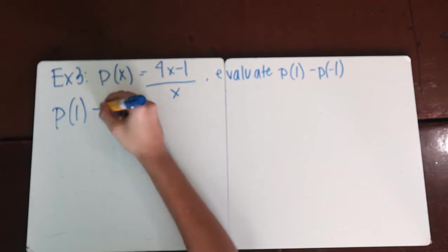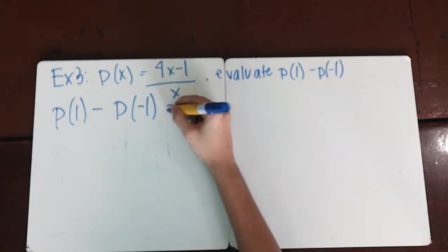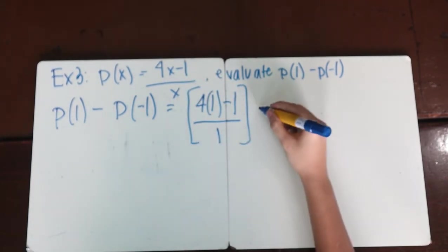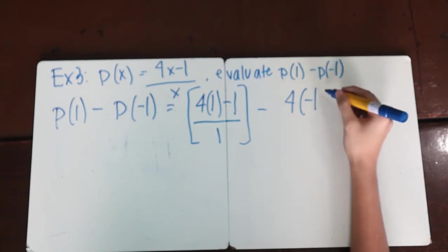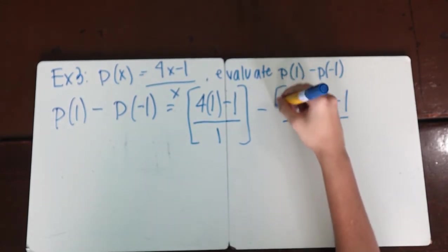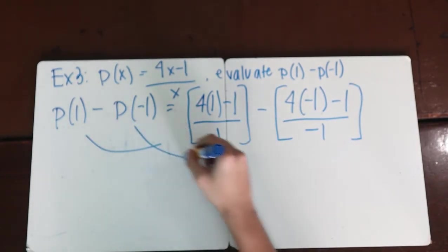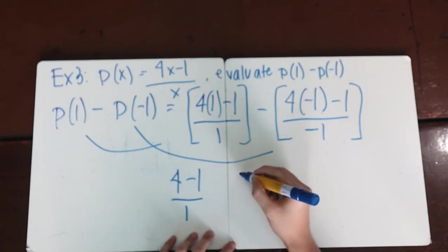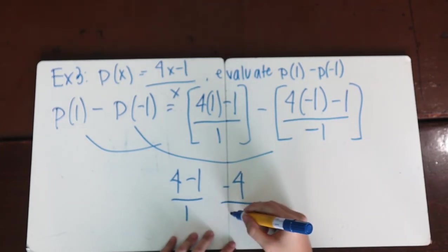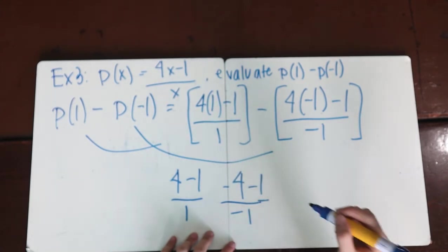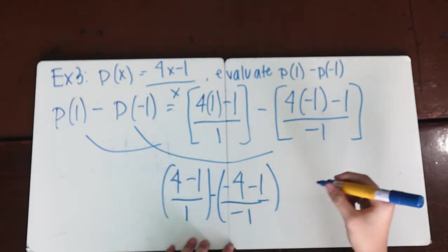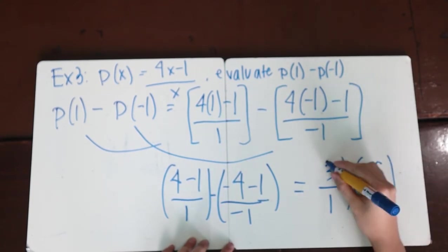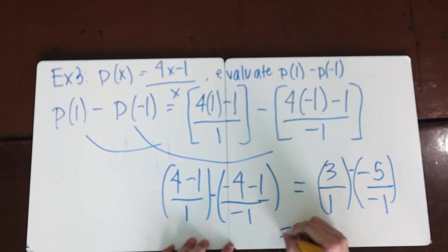Our solution is something like this: p(1) - p(-1) equals [4(1) - 1]/1 minus [4(-1) - 1]/(-1). That would equal (4 - 1)/1 minus (-4 - 1)/(-1), which equals 3/1 minus (-5)/(-1).